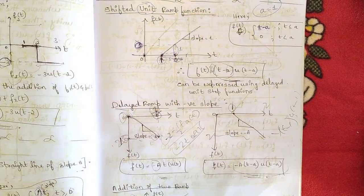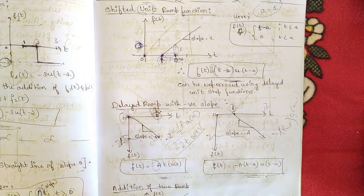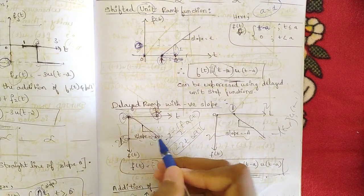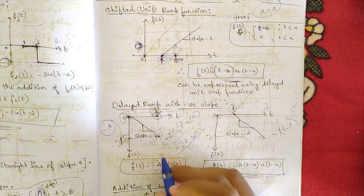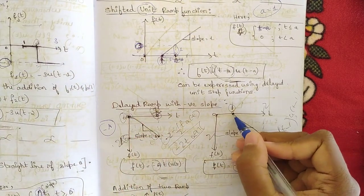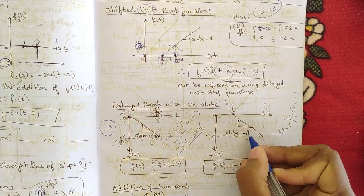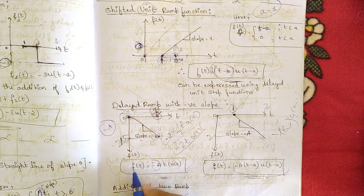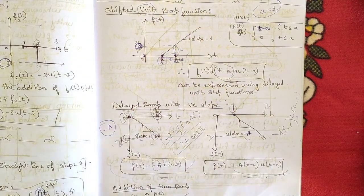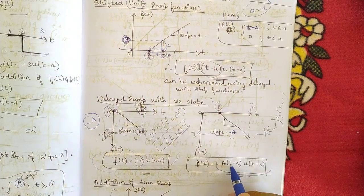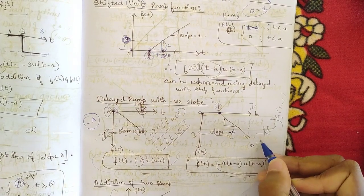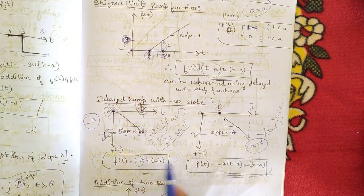Now let us see the delayed ramp with negative slope. A negative slope means the graph goes downward, with slope equal to −a. This is not a unit ramp — it is a delayed ramp with negative slope. Starting from zero it is f(t) = −a·t·u(t), and starting from point one it is f(t) = −a·(t − a)·u(t − a), where a = 1.